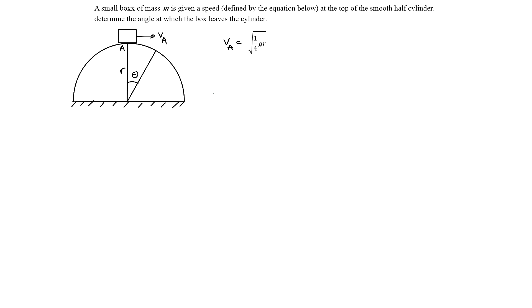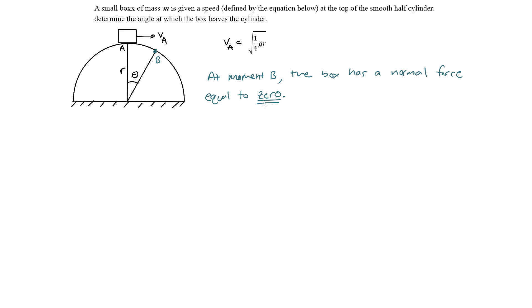One key thing to point out is that when a box or any particle leaves a surface, the normal force is equal to zero. So let's say the box is right here — this is the position at which the box leaves the surface. We'll call this moment b. At moment b, the box has a normal force equal to zero, because when the box loses contact with the surface, there is no normal force acting on that object.